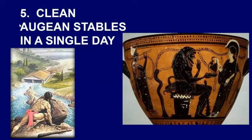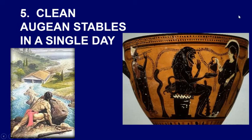Another one of Heracles's labors was to clean the Augean stables in a single day. The problem was these stables held 30,000 horses and hadn't been cleaned in 30 years — you can imagine the amount of dung that builds up. It was an impossible task to clean it out. But what Heracles did was divert a river to wash through the stables instead of cleaning them out himself. This black figure vase shows him taking a break after he diverted the river.